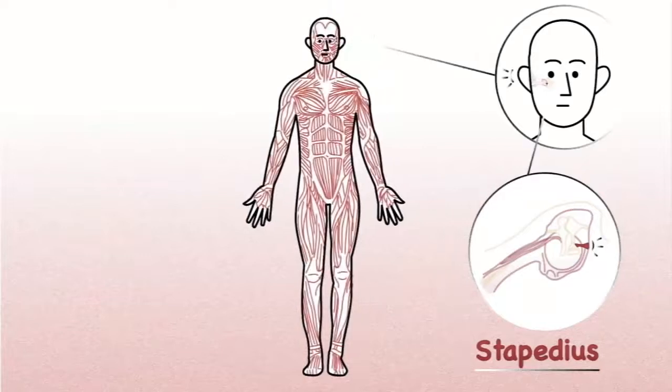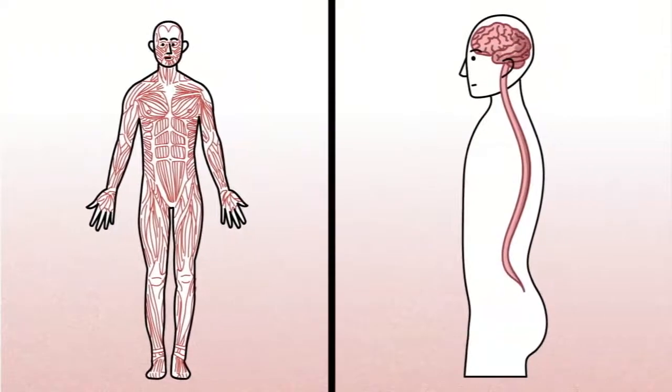Wherever they occur, skeletal muscles are connected to the somatic nervous system, which gives us almost complete control over their movements.